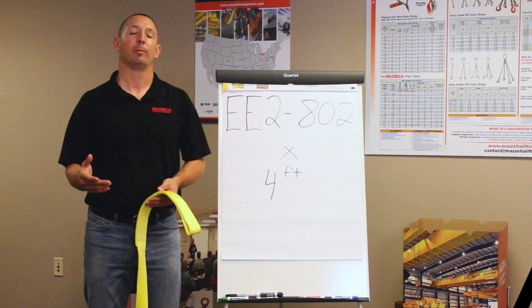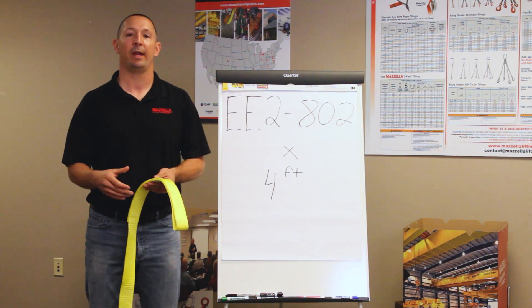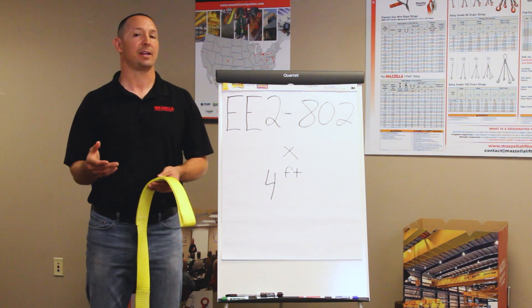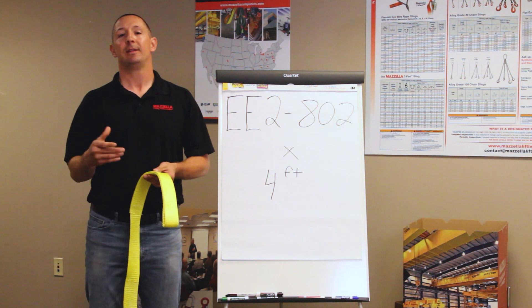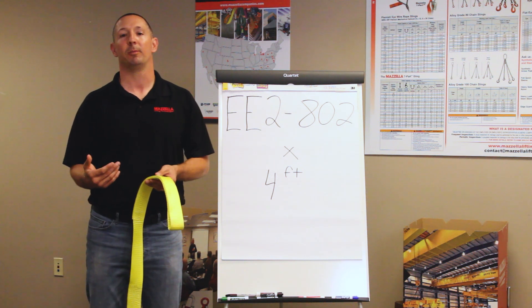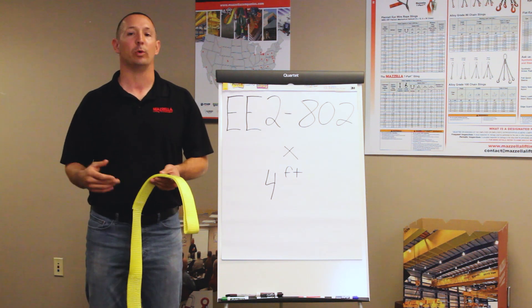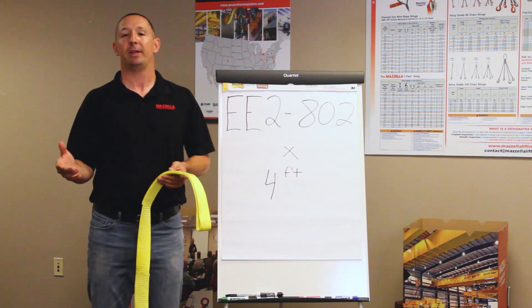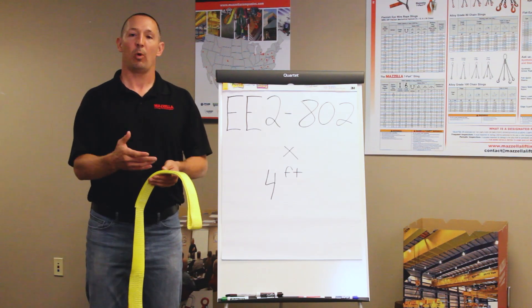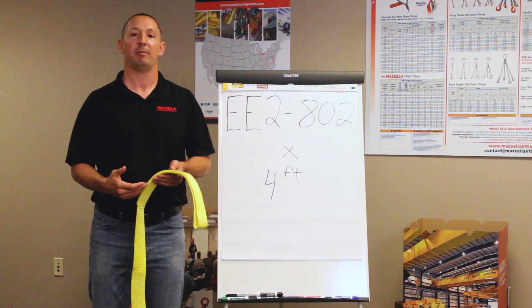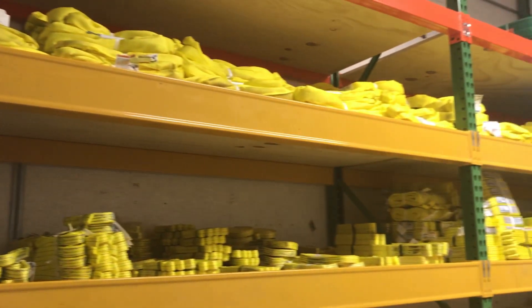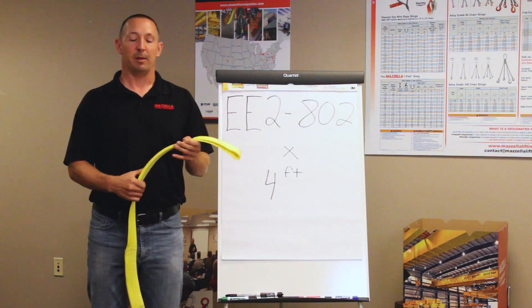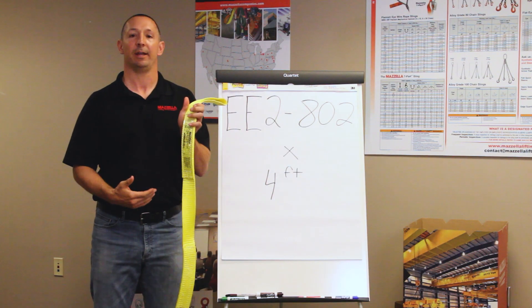Oftentimes I'll get a call from a customer asking me to explain the verbiage that he sees on his quote, order, or rigging inspection report that we give him. Not to mention too, I'll get a call from a customer asking me to get him some 2 inch flat web slings. It's simply not enough information. So I'm going to walk you through an example of a sling that I have in my hand and the verbiage associated with it, so that we can be on the same page when you guys need to order some flat web slings. In my hand, I've got a 2 inch wide sling.